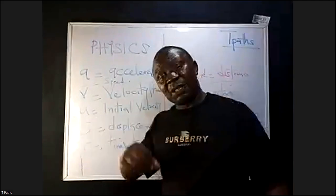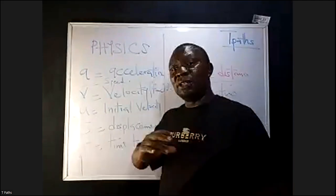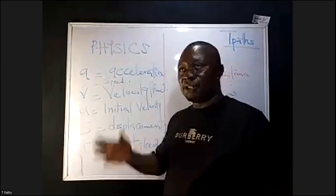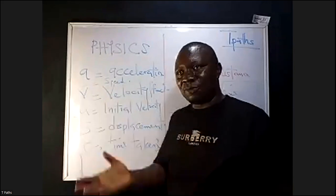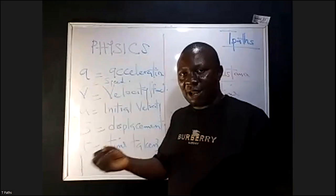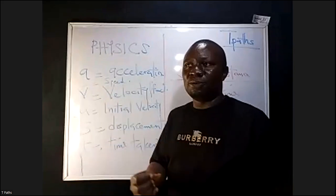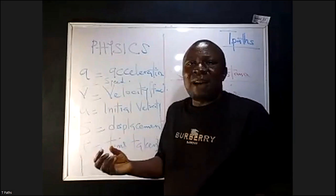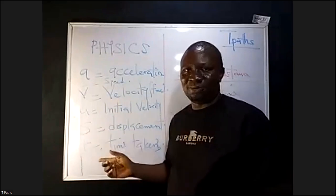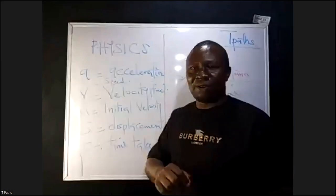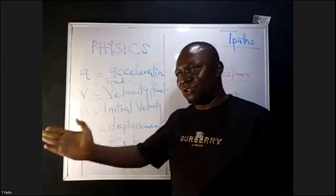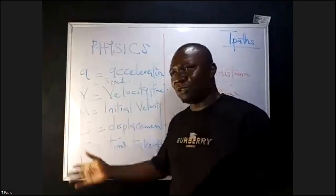Speed and velocity, they are the same. But because of the quantity it carries, speed is a scalar quantity. Scalar quantity is something that has magnitude but no direction. For vector quantity, it's something that has both magnitude and direction.